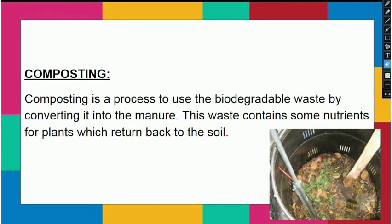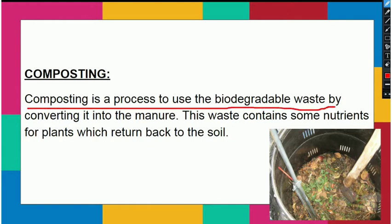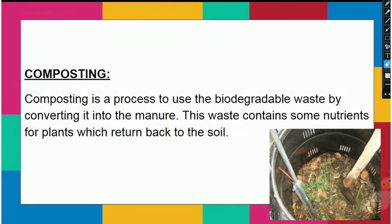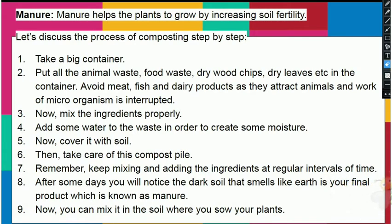Composting is a process used to convert biodegradable waste into manure. This waste contains some nutrients for plants which return back to the soil. Composting uses biodegradable waste and converts it into manure. Manure helps the plant to grow by increasing the soil's fertility.